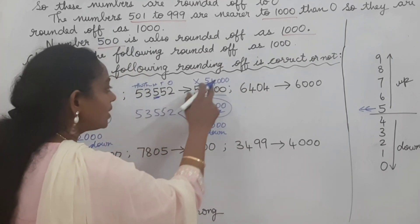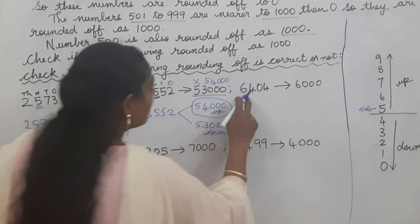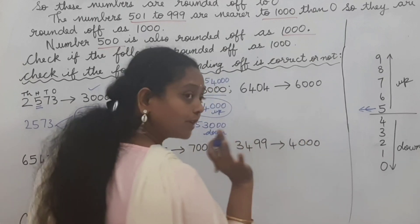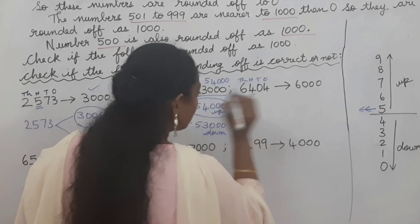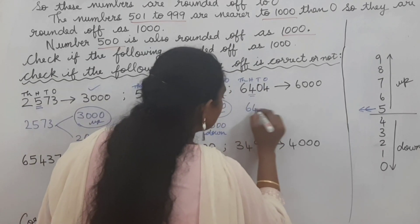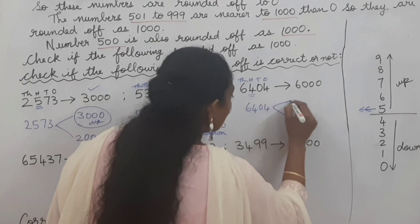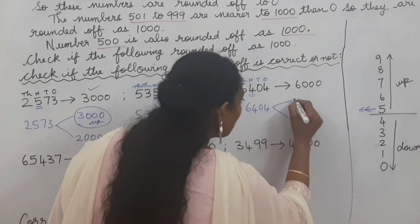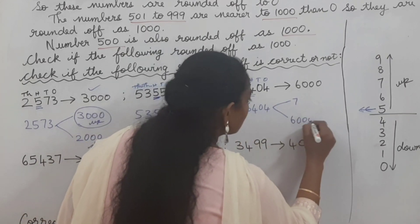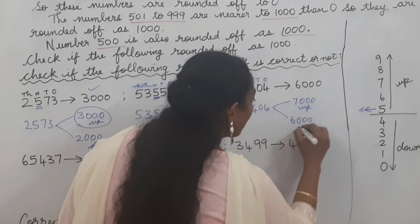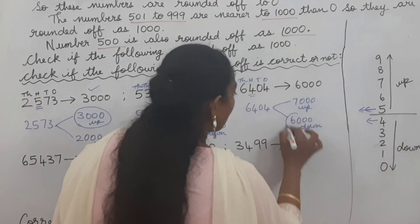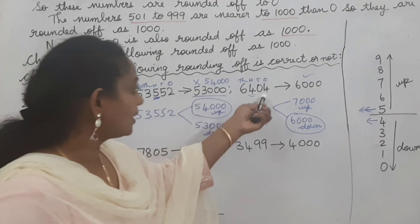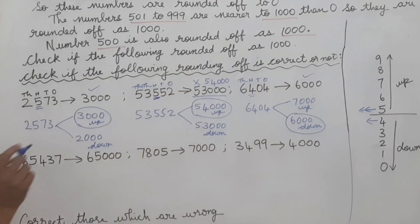Next: 6,404 is rounded off to 6,000. Write ones, tens, hundreds, thousands. We look at the hundreds place. Write 6,404 and put two arrows. The thousands digit stays same below, plus one above gives 7,000, followed by three zeros - so 6,000 below and 7,000 above. The hundreds digit is 4, which is in the lower range. So 6,000 is correct - 6,404 is rounded off to 6,000.